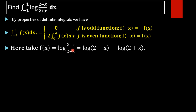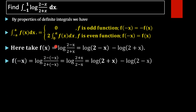Next we have to check whether the function is odd or even. Using the property that log(a/b) equals log a minus log b, we get f(x) equal to log(2 minus x) minus log(2 plus x). Now we compute f(minus x) by substituting minus x instead of x in this function, giving log of (2 minus (minus x)) divided by (2 plus (minus x)).